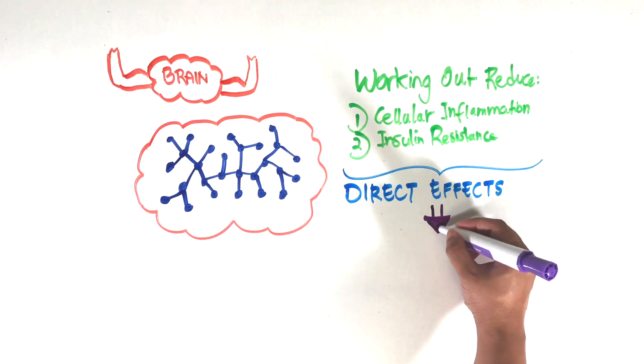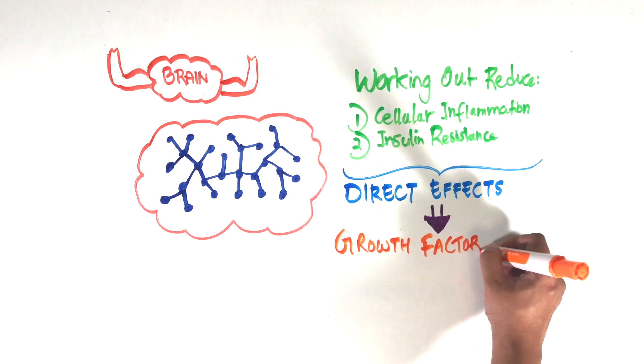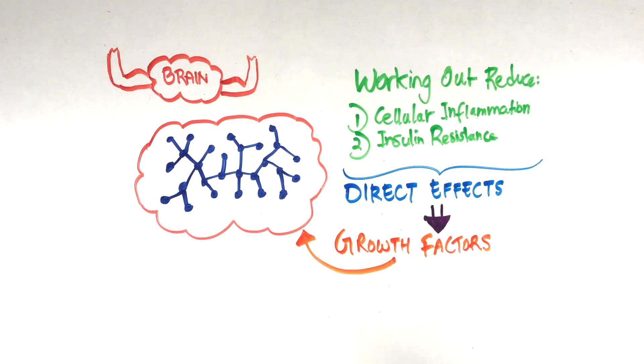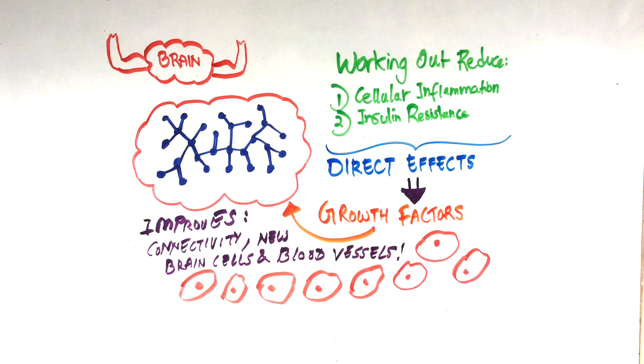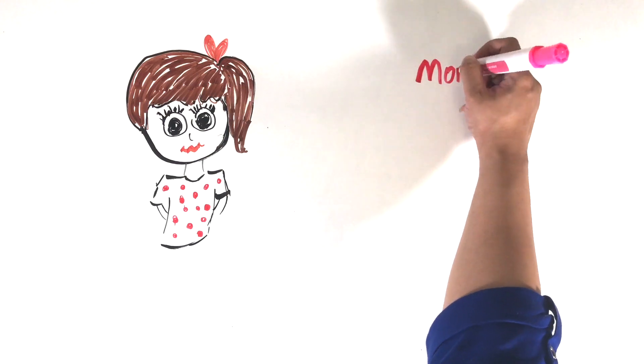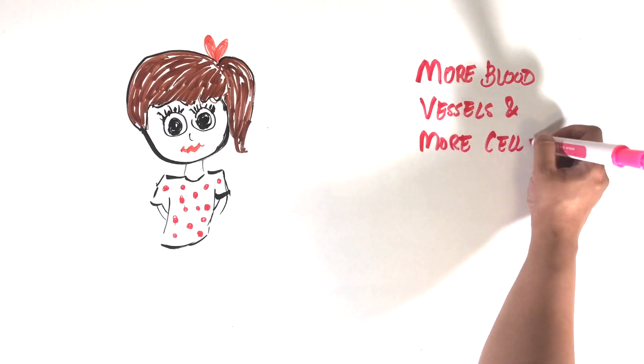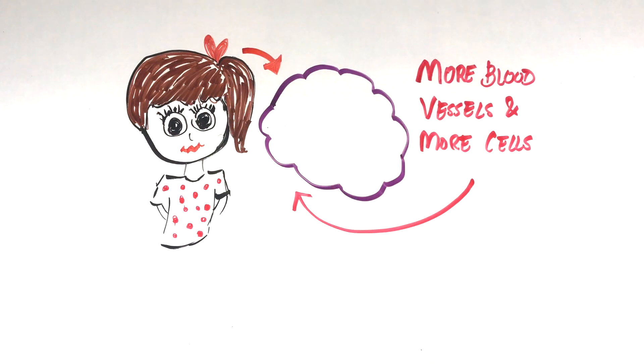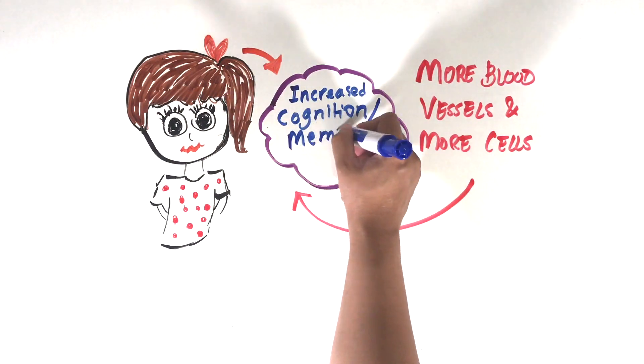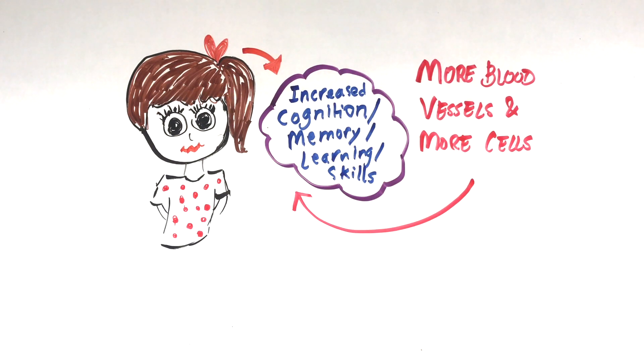One of the direct effects of physical activity is that it reduces cellular inflammation and insulin resistance. This in turn stimulates growth factors to be released that promote the growth of new nerve cells and blood vessels in the brain. Additionally, the growth factors also ensure the repair and survival of existing brain cells. Thus, cognitive function is affected directly from physical activity.